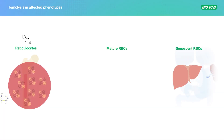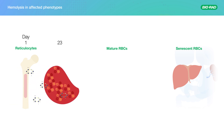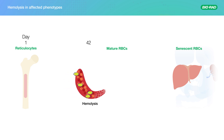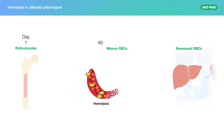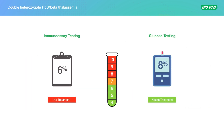Since homozygous and double heterozygous samples have been heavily affected by hemolysis, they have a reduced RBC lifespan. This alters the glycation process and invalidates the A1c result. So by using these blind methods, the laboratory risks reporting underestimated hemoglobin A1c results, and patients may not receive treatment when they should.